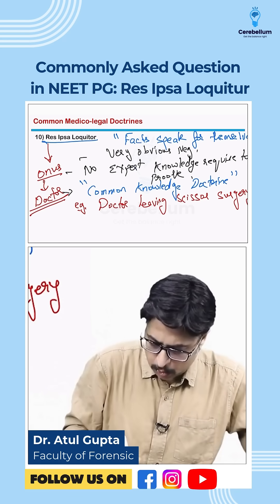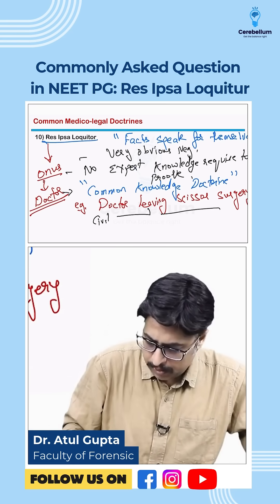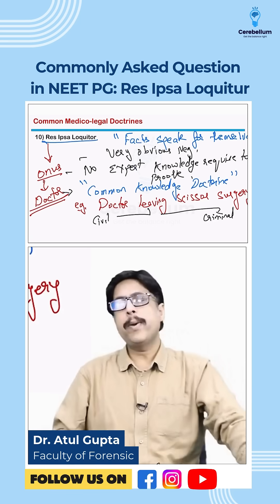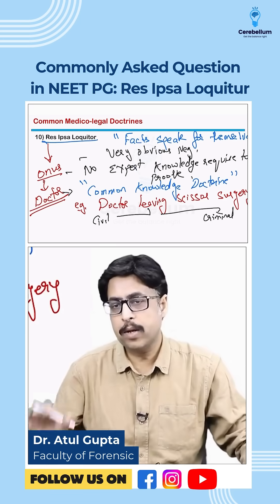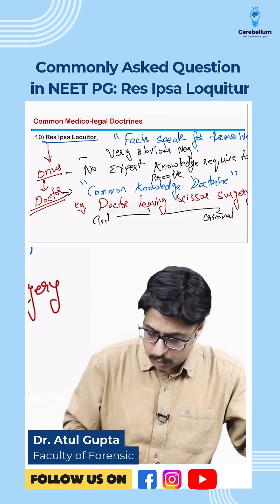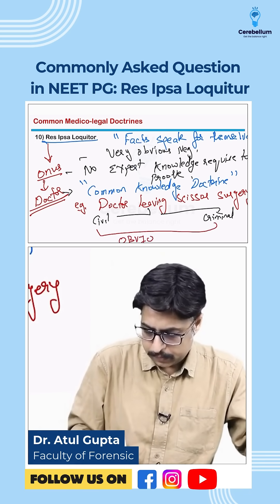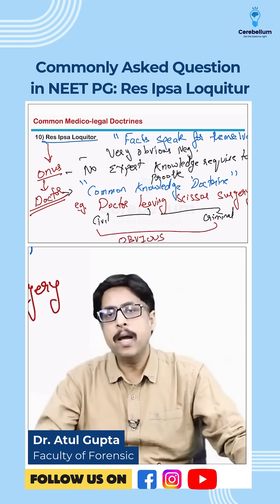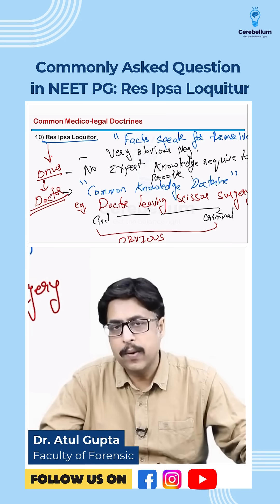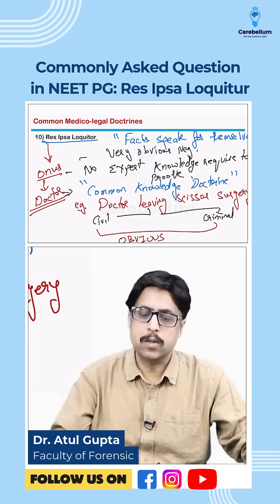Please remember, res ipsa loquitur is applicable for both civil as well as criminal negligence. It does not matter whether it is civil or criminal — what matters is whether the negligence is obvious, meaning it can be proved by a layman's common knowledge and does not require expert knowledge to prove. That is res ipsa loquitur.